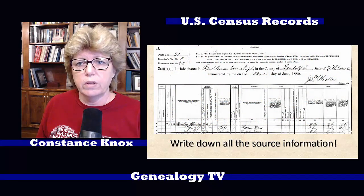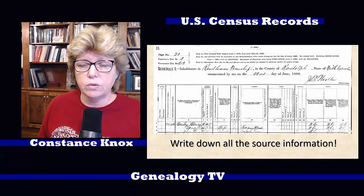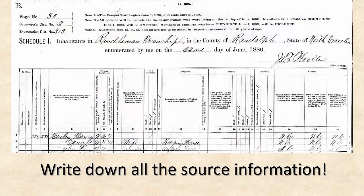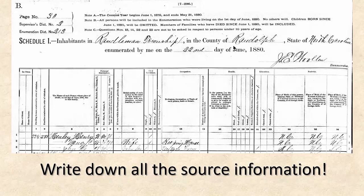One of the things I want to emphasize is to write down your sources. Let's take a look at this record for a moment. Here we have a record for Henry Henley and his wife Nancy C., and their son John — we know that because now they're starting to label the relationship. This is for Randleman Township in Randolph County, North Carolina. You always want to pay attention to the dates, and to all the information on the top, and you want to document that.